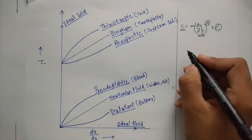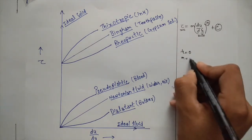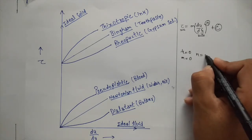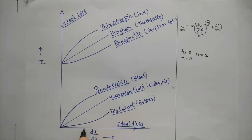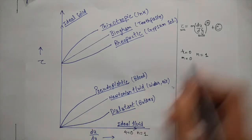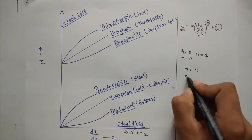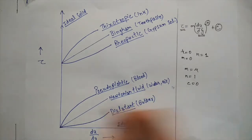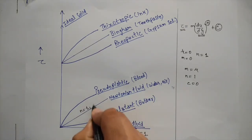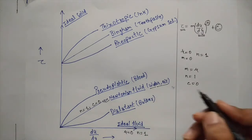For ideal fluid, viscosity mu equals 0, meaning M equals 0 and n equals 1, so the graph is parallel to the x-axis. For Newtonian fluid, substituting M as mu, n as 1, and c as 0 gives a straight line through the origin. Examples of Newtonian fluids are water and air.